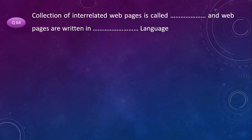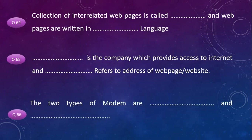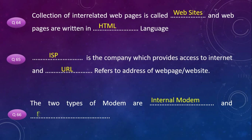A collection of interrelated web pages is called a website, and web pages are written in HTML language. ISP – Internet Service Provider – is the company which provides access to the internet, and URL – Uniform Resource Locator – refers to the address of a web page or website. The two types of modem are internal modem and external modem.